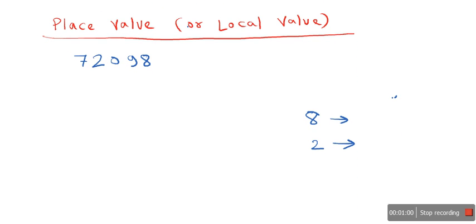Place value is also known as local value. So we have a number here, that is 72098. This digit 8 is located in unit's place. This is the unit's place.